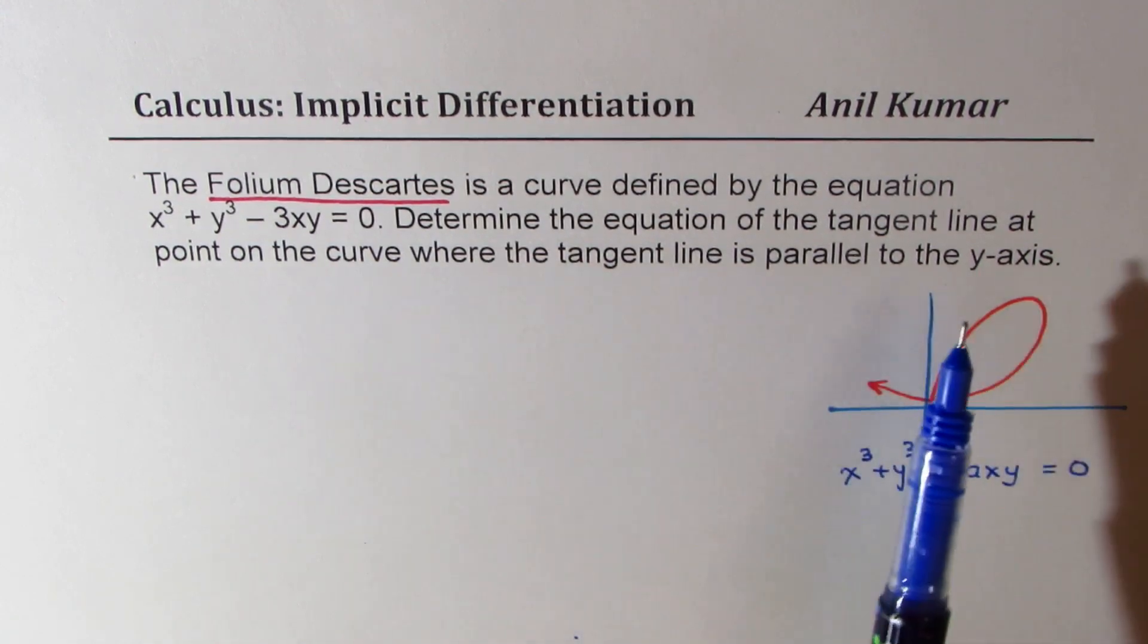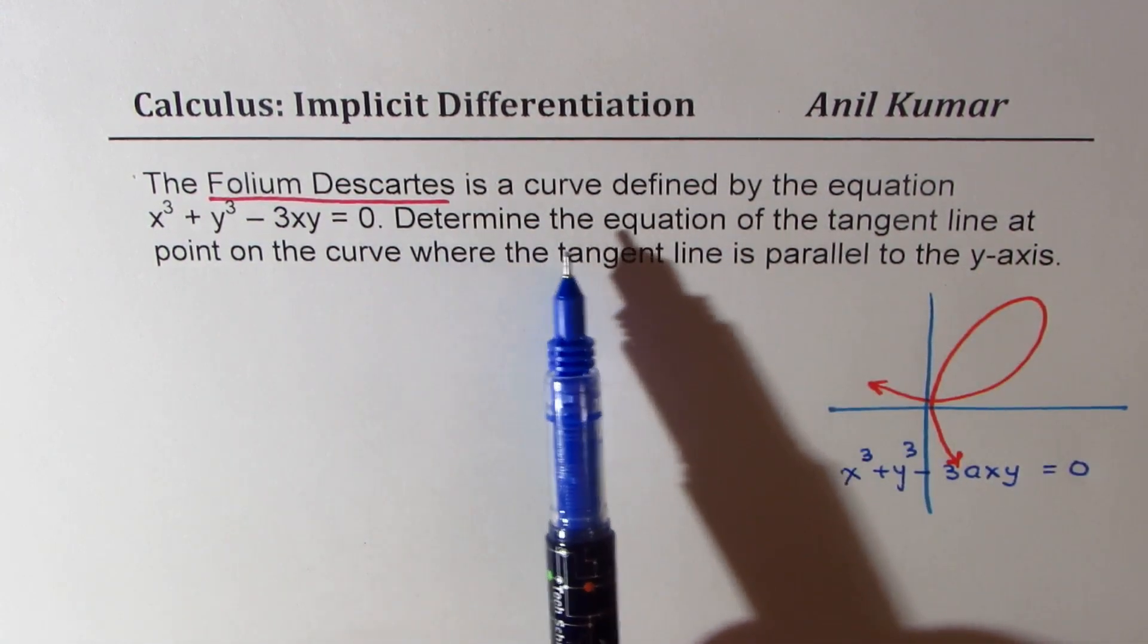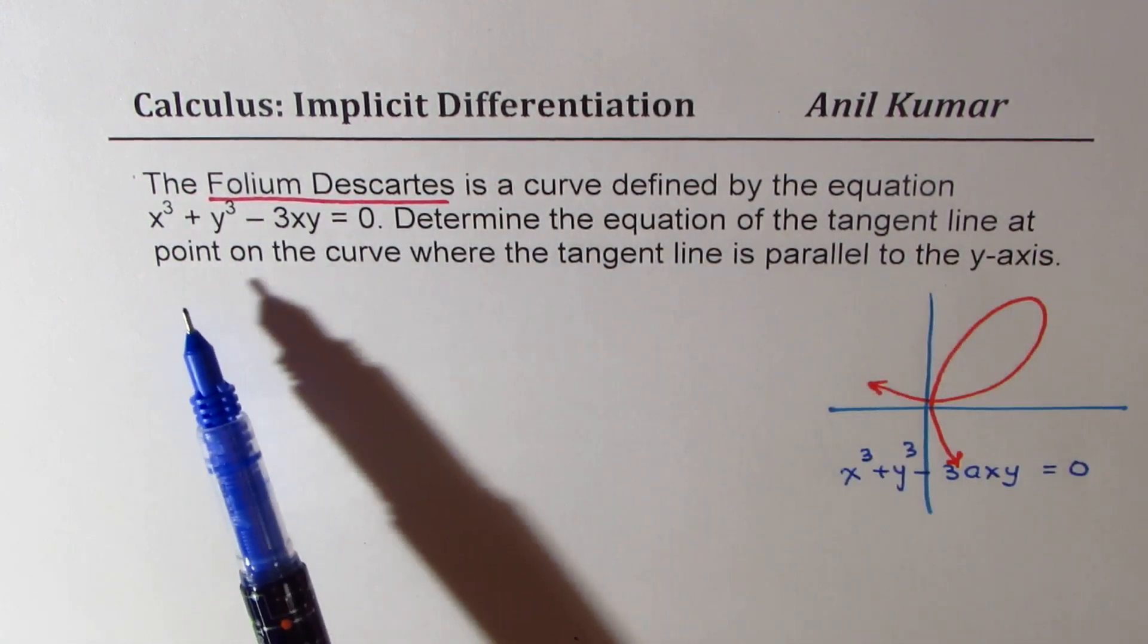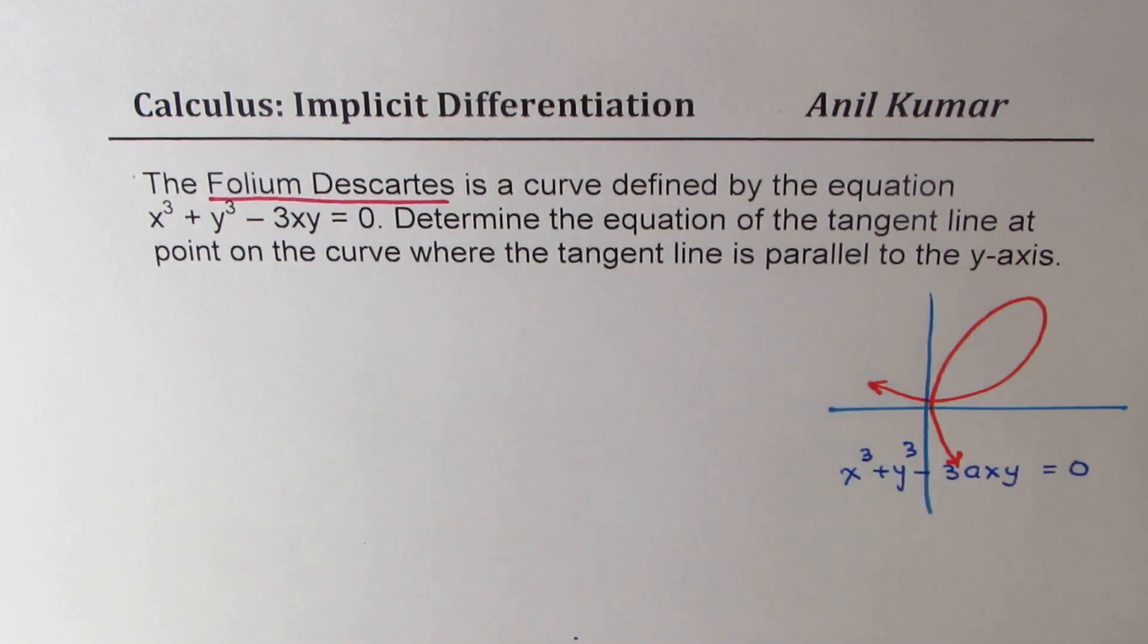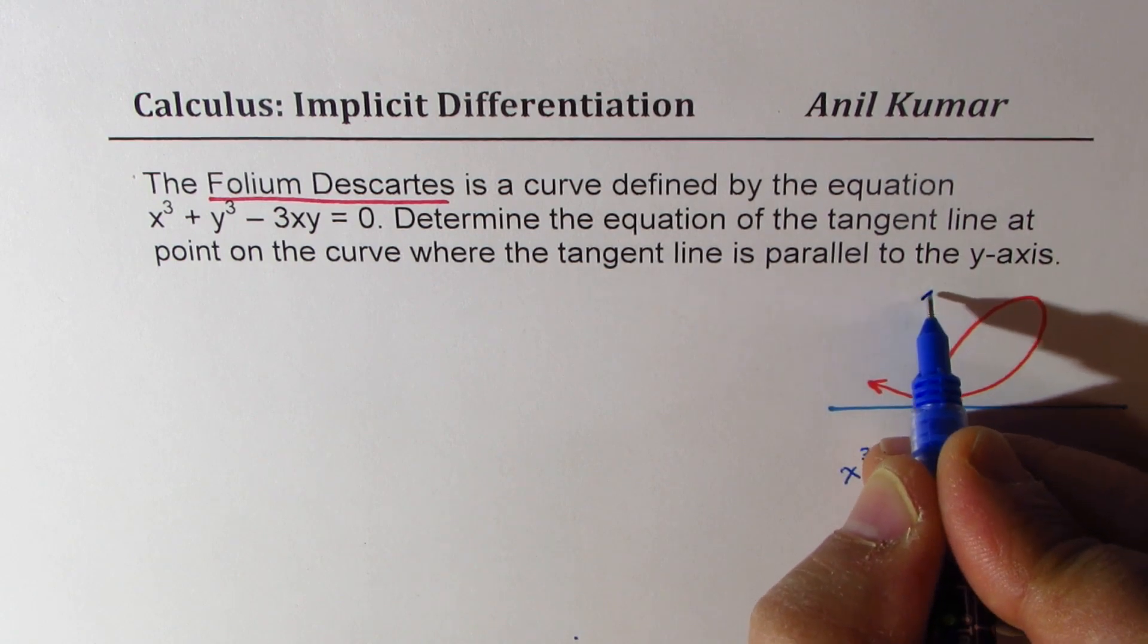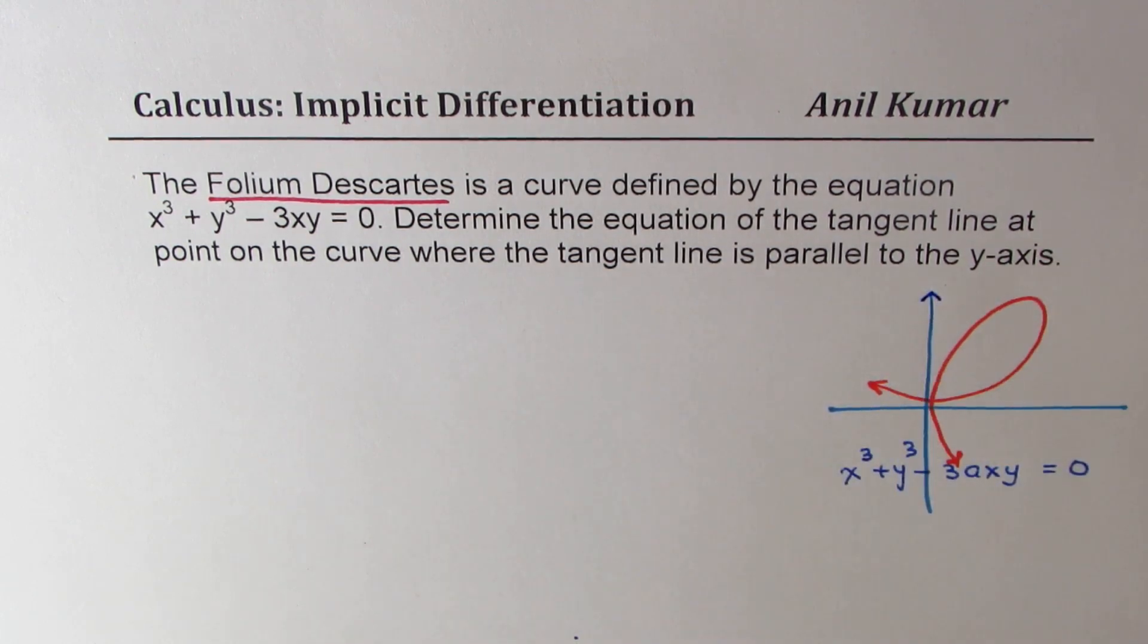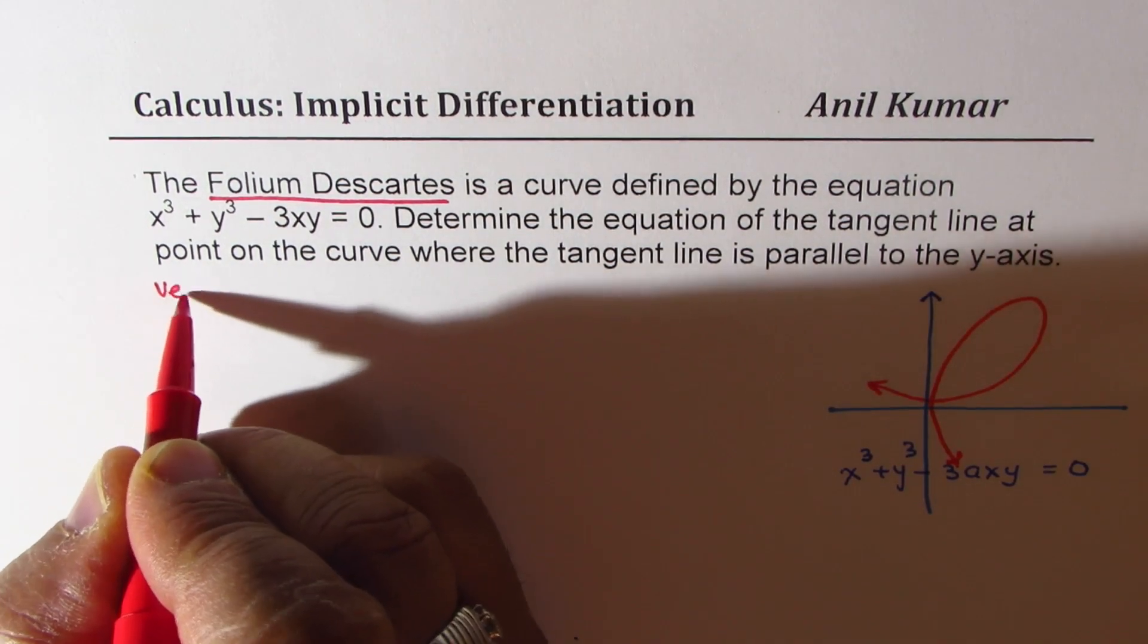Now let's look into the equation itself. It says, determine the equation of tangent line at point on the curve where the tangent line is parallel to y axis. So we want vertical tangent. So we're looking for undefined slope. So we need vertical tangent.